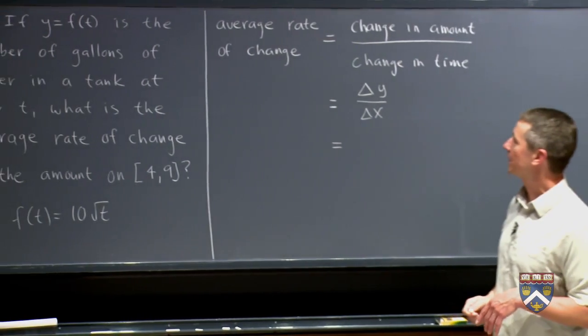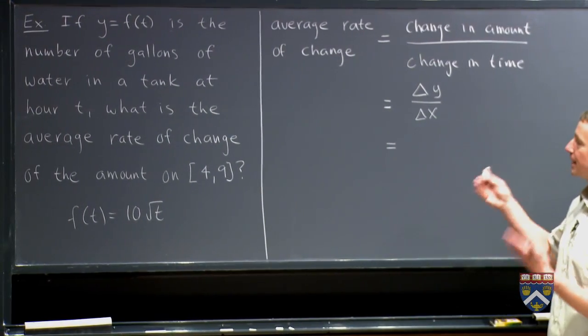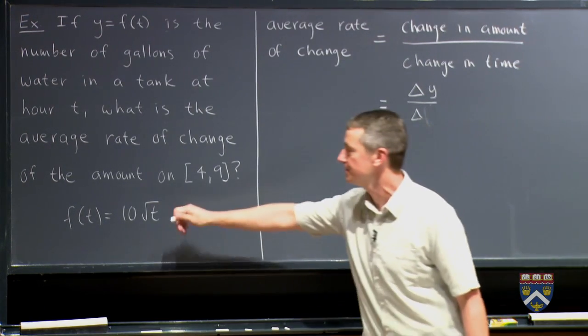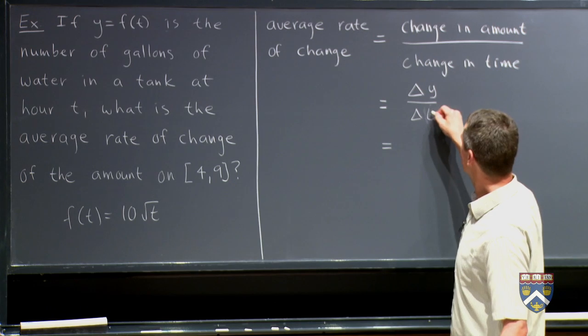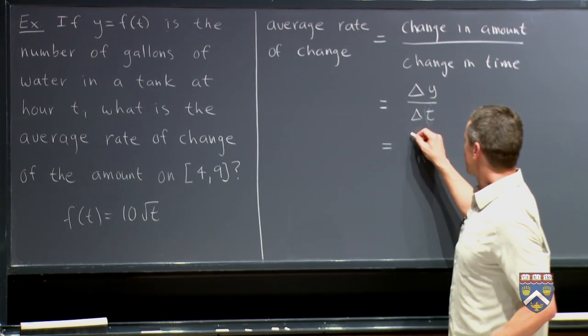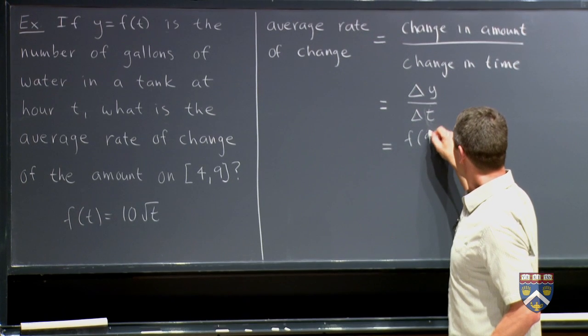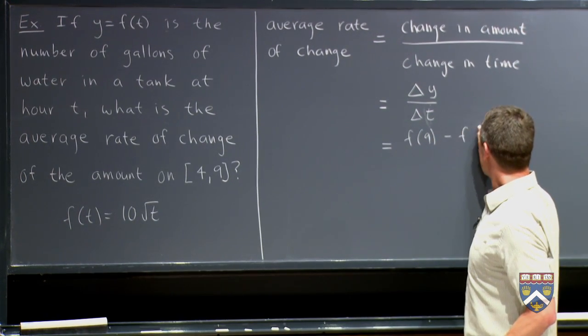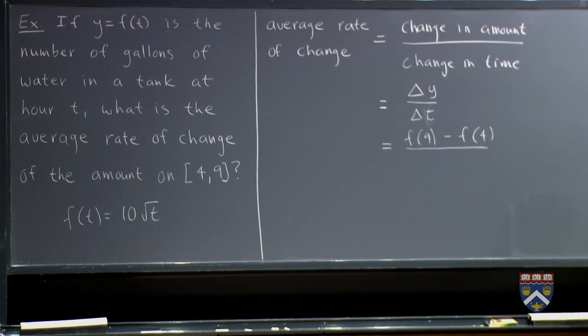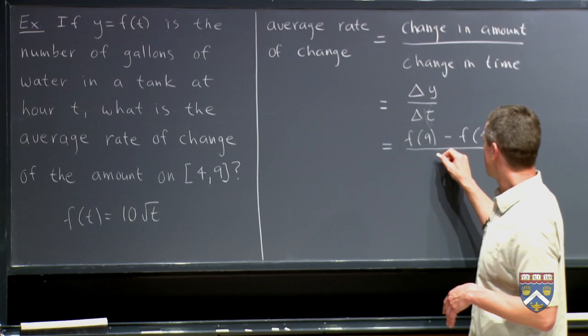So what remains is for us to figure out what these actually are. So how much water did we gain during this time? I guess this shouldn't be x here because our input is t. So we should be calling this delta t. So the amount of water that we have at the end of the interval is f of 9. And the amount that we had at the start of the interval was f of 4. So this is how much water we gained or lost during the time. And the time was 9 minus 4.